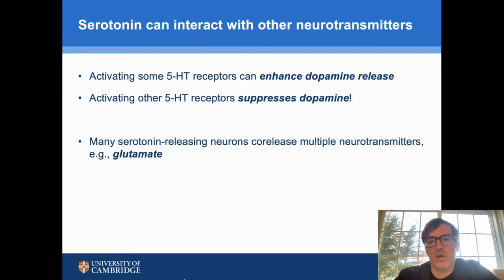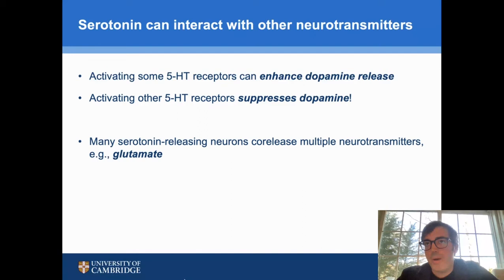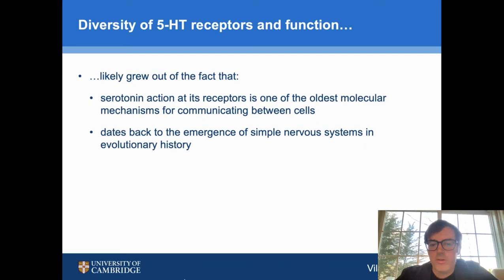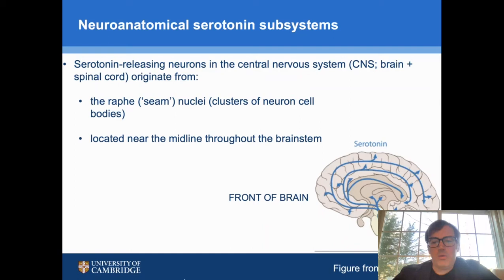Serotonin can interact with other neurotransmitters. For example, when some serotonin receptors are activated, this can enhance dopamine release; others, when activated, actually suppress dopamine. And a lot of serotonin-releasing neurons actually release other neurotransmitters in parallel at the same time. For example, about 80% of serotonin neurons projecting to the brain co-release glutamate, another neurotransmitter. This diversity of serotonin receptors and function likely grew out of the fact that serotonin is actually one of the oldest molecular mechanisms for communicating between cells, dating back to the emergence of simple nervous systems in evolutionary history.